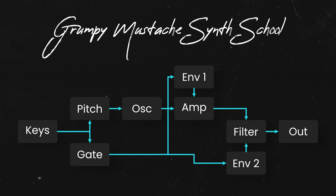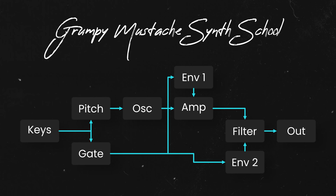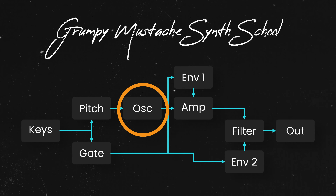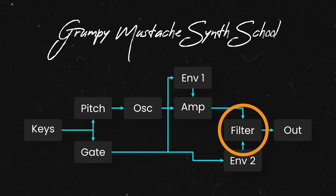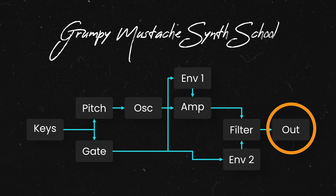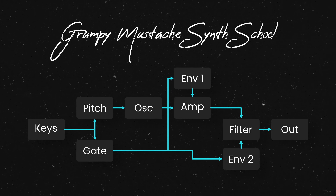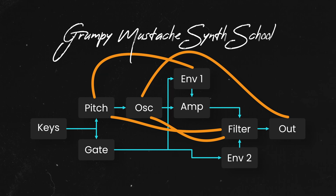That leads us nicely to the big question of the day: why exactly would you want a semi-modular synth instead of a regular synth? With a normal synthesizer, the routing is fixed and things only go one way. In a basic synth setup, the oscillators go to an amplifier, the amplifier is shaped by an envelope, the amplifier goes to a filter, the filter probably has another envelope, and then the filter goes to the output. What a semi-modular synth lets us do is break these connections and reroute based on the patch points.